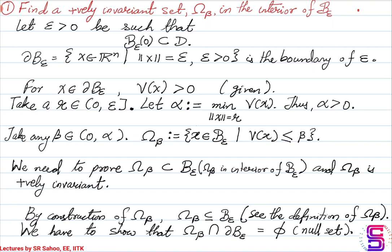For the first part of the proof, we have to establish that there is a positively invariant set in the interior of B_epsilon — basically the set is a proper subset of B_epsilon and is positively invariant. We have a domain or set D in which the function has been defined, meaning the system evolves in that set D which is a subset of R^n. Suppose you have epsilon greater than 0 such that you are able to find the epsilon ball around origin which is a subset of D.